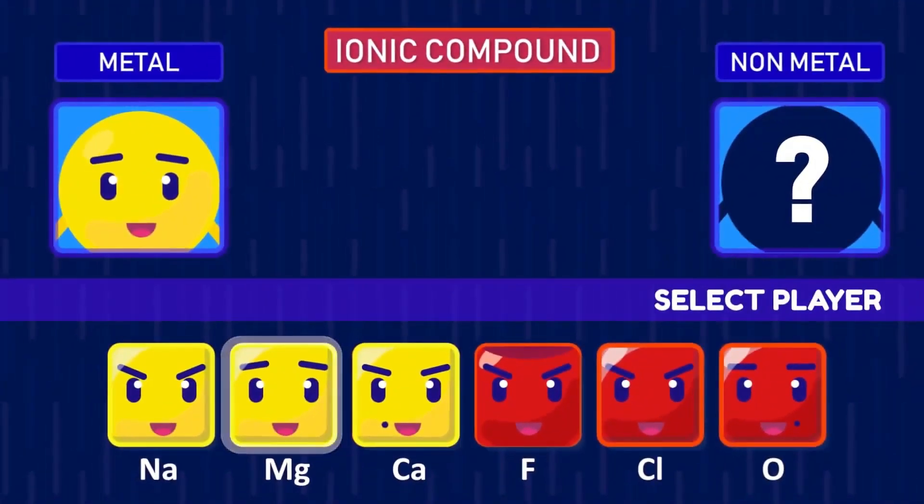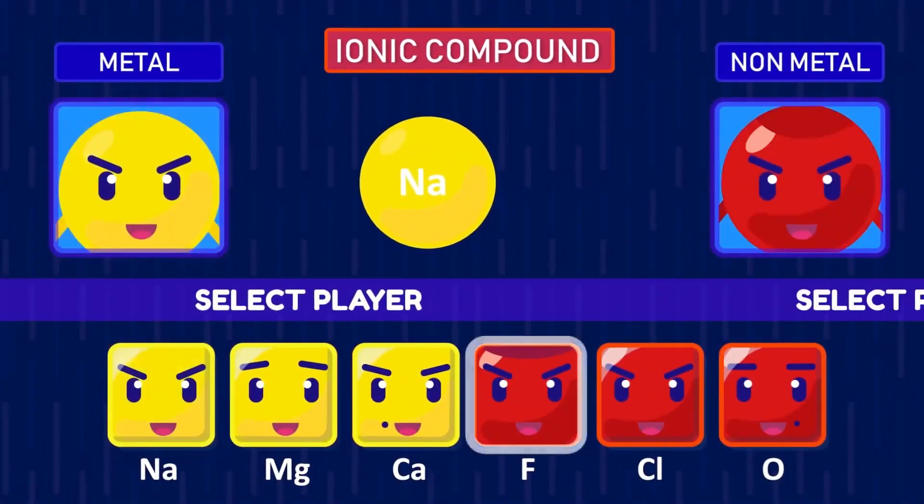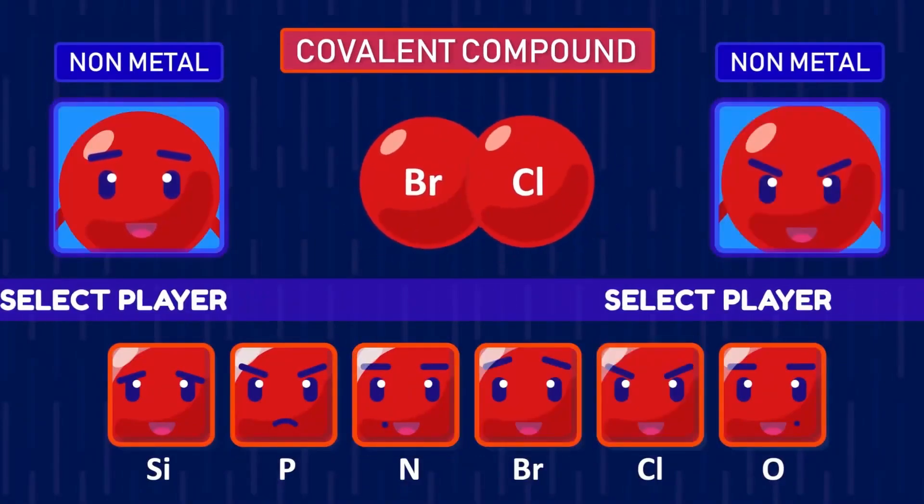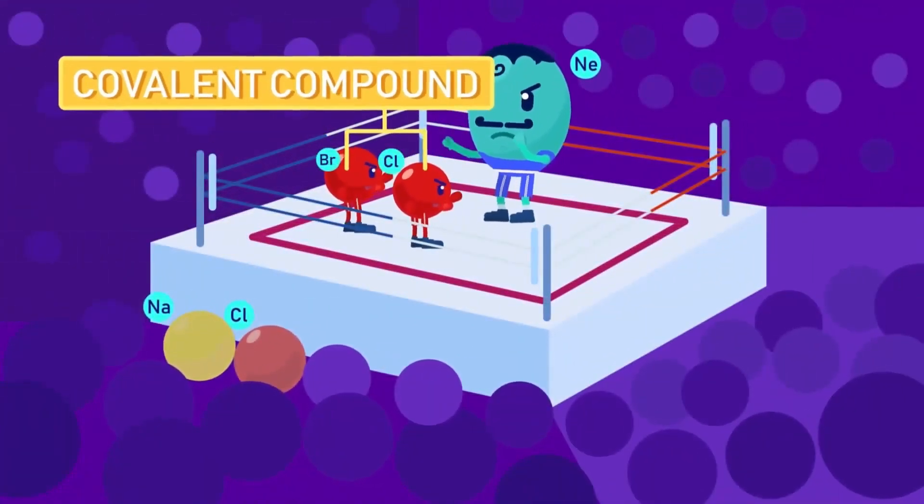If metal elements are present to form a compound, it is called an ion compound. Meanwhile, if the compounds are only formed between non-metallic elements, they are called molecular or covalent compounds.